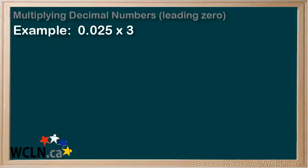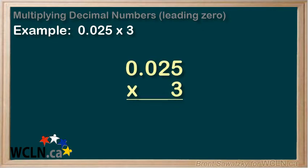Let's do an example with a leading zero in there. 0.025 times 3. So let's line it up like this and recall that this zero here is just to highlight the decimal, while this zero is our leading zero. Let's work through this and see how they're both dealt with.